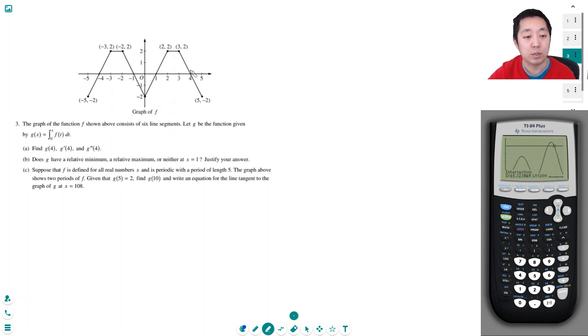This is still the calculator portion of the exam by the way. The graph of the function f above consists of six line segments. Let g be the function given by this. Find g of 4, g prime of 4, and g double prime of 4.